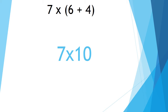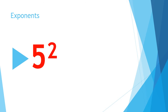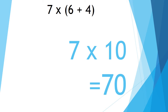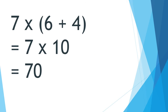Next, we need to look for exponents. In case you forgot, exponents look like this. Since there are no exponents in our problem, we then move on to multiplication. What is seven times ten? Think time. If you said seventy, hallelujah! You're right! So our final answer to the problem, seven times open parentheses six plus four close parentheses, is seventy. Here is the problem worked out for you.